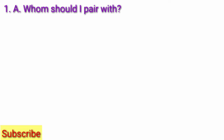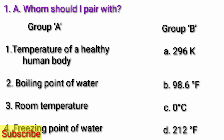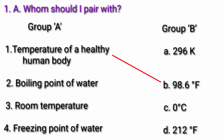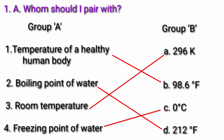Question 1D: Match the pairs. Temperature of a healthy human body: 98.6 degrees Fahrenheit. Boiling point of water: 212 degrees Fahrenheit. Room temperature: 296 Kelvin. Freezing point of water: 0 degrees Celsius.